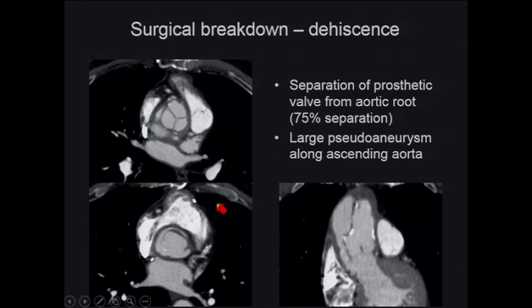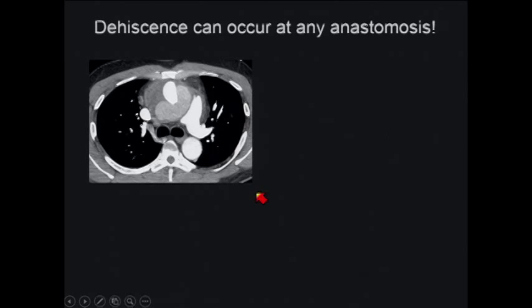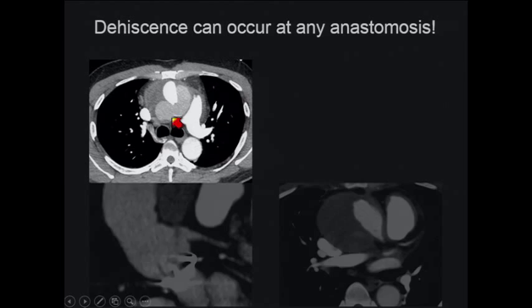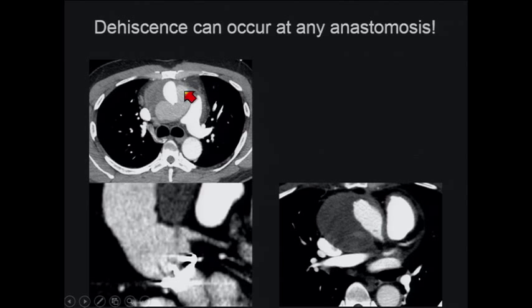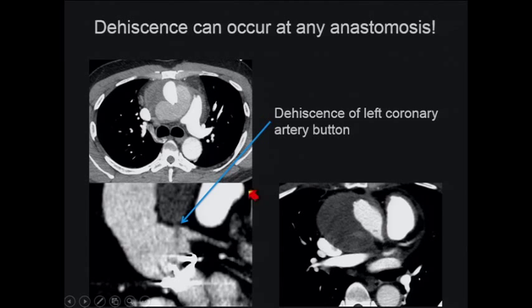Dehiscence can occur at any anastomosis — this is why we stress knowing what surgery has been done. Here's a patient who came in with a pseudoaneurysm on an outside CT. The surgeons took the patient to the OR thinking the dehiscence was at the distal graft, but about an hour in they asked us to look at the images. On the axial images there was a subtle horizontal finding, and on reconstruction you see it's actually coming from the left coronary button — a dehiscence of the button with a small negative contrast jet, confirmed at surgery.